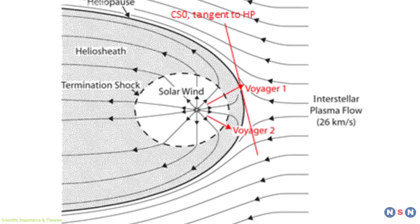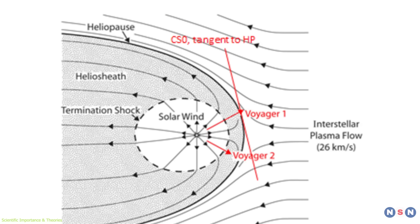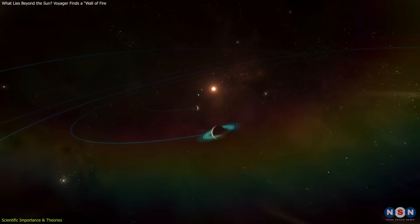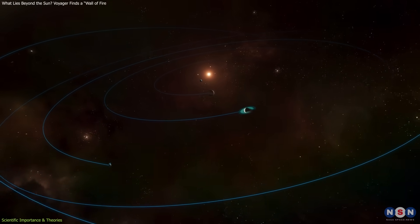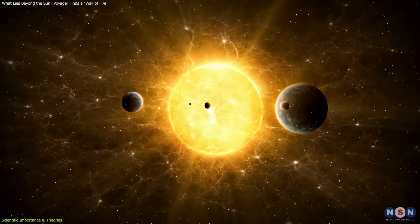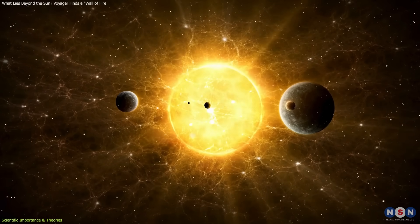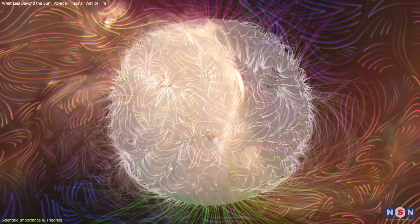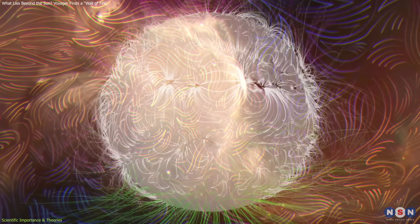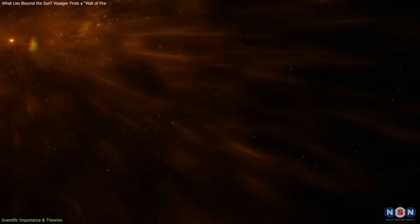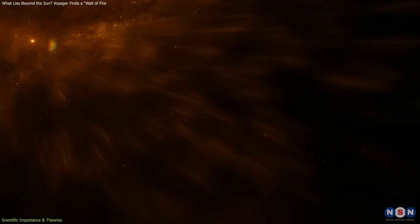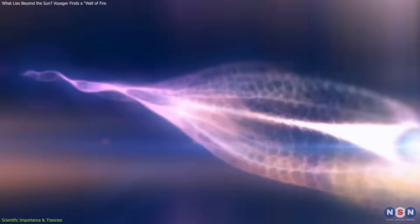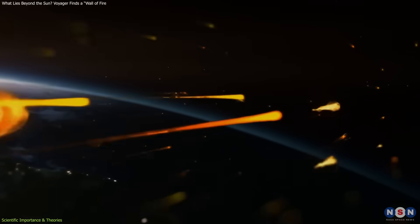The magnetic field alignment adds another layer of complexity. Why are the fields inside and outside the heliopause aligned? One possibility is that the sun's magnetic influence stretches farther than previously thought, subtly shaping interstellar conditions near our system. Another is that the local interstellar magnetic field has an organized structure that interacts with and adapts to the sun's field. This has implications for how cosmic rays, high-energy particles originating from distant astrophysical sources, enter our solar system.